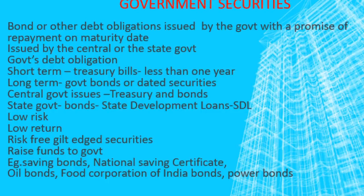Government securities can be of two types: short-term or long-term. Short-term government securities are usually known as treasury bills and the maturity period will be less than one year. Long-term government securities, usually called government bonds or dated securities, are the second category and the maturity period of these long-term bonds or dated securities will be more than one year.